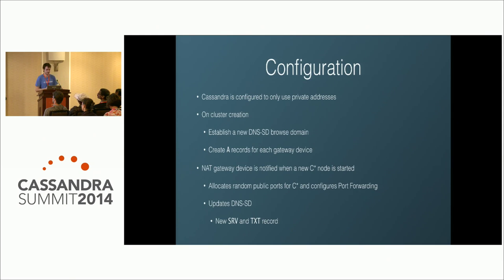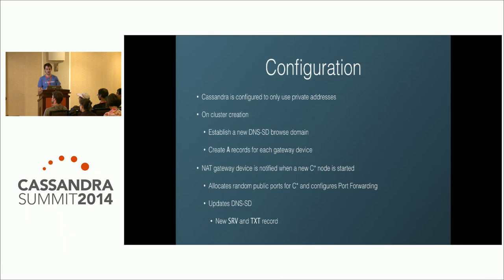For configuration: Cassandra is configured to use only private addressing, so it believes it's all running inside a single network. When a cluster is created, we establish a new browse domain in DNS and create an A record for each NAT gateway. The NAT gateway itself is responsible for updating DNS SD — when a new node starts up inside the data center, the gateway is notified, configures port mappings with randomly allocated public ports forwarded to the standard Cassandra ports on the private machines, and updates the browse domain with new SRV, TXT, and PTR records.